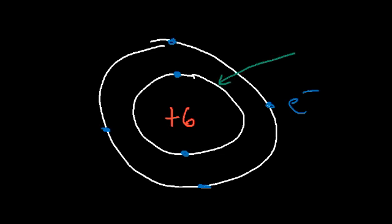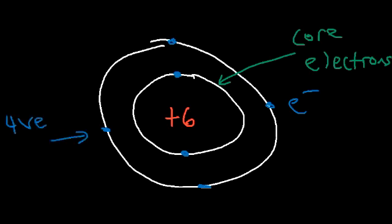Electrons carry negative charges, protons have positive charges, and neutrons are neutral. So carbon has a total of six electrons. The two electrons on the inside are known as core electrons, and the electrons in the outermost energy level are known as valence electrons. Carbon has four valence electrons. On the periodic table, carbon is found in group 4A, which is the same as group 14.